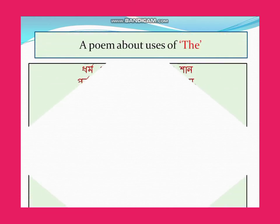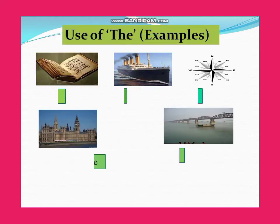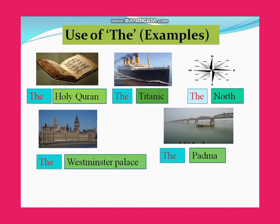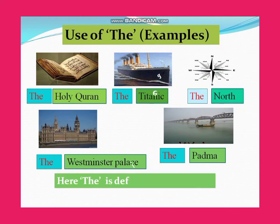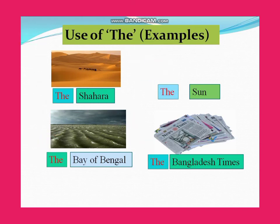A poem helps us remember the uses of 'the' — covering rivers, mountain ranges, oceans, newspapers, deserts, and more. Examples include: the Holy Quran, the Titanic, the North, Westminster Palace, the Padma, the Sahara, the Sun, the Bay of Bengal, the Bangladesh Times. Here 'the' is the definite article used in all these cases.